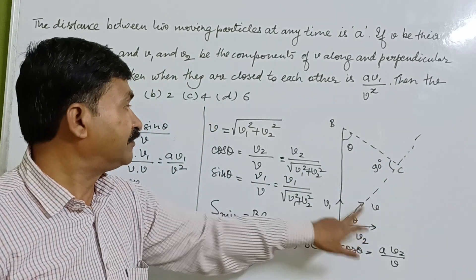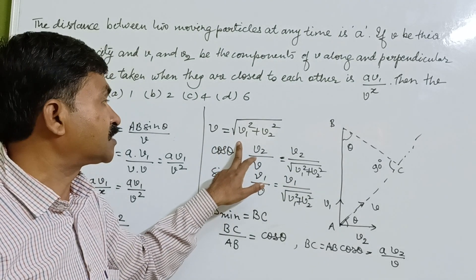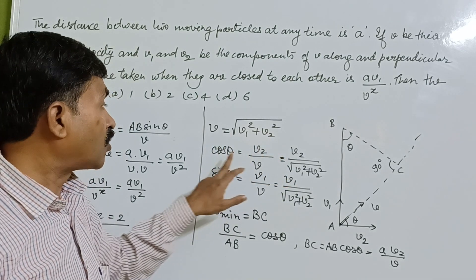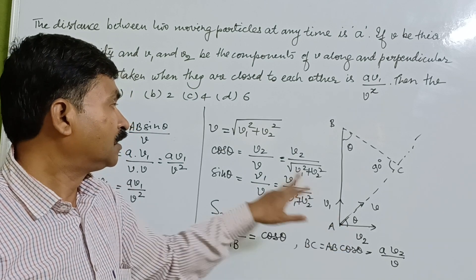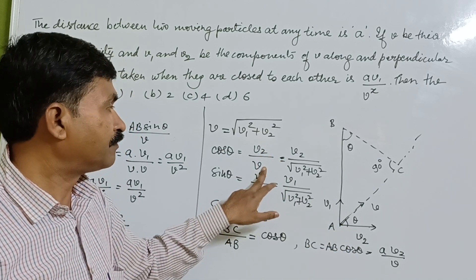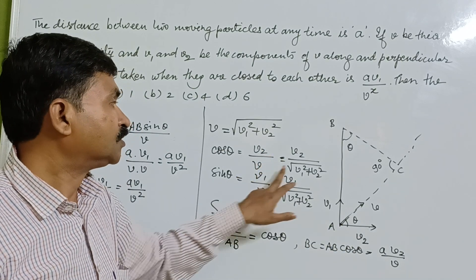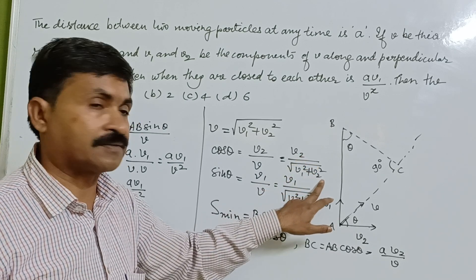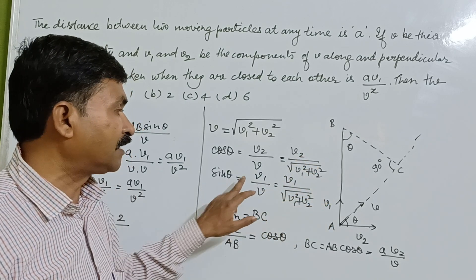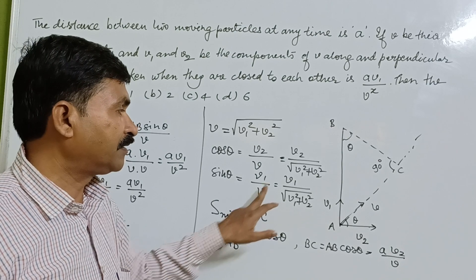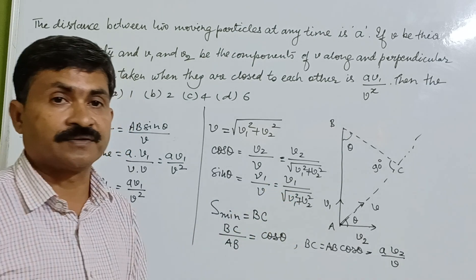Resultant velocity V will be given by under root V1 square plus V2 square. Cos theta we can determine with the help of V2 upon V based upon hypotenuse, so V2 upon under root V1 square plus V2 square. Similarly, sin theta will be V1 upon V, V1 upon under root V1 square plus V2 square.